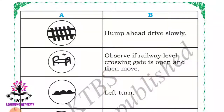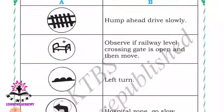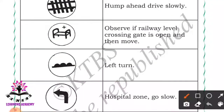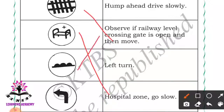See the second one - it is a hospital sign. Match it to: hospital zone, go slow. Third one - it is hump ahead, drive slowly. Match it to: hump ahead, drive slowly.